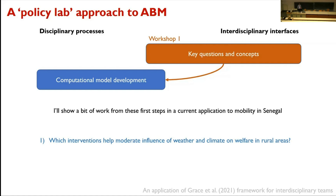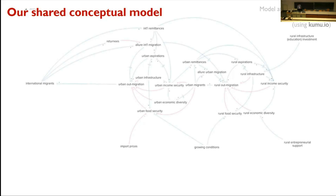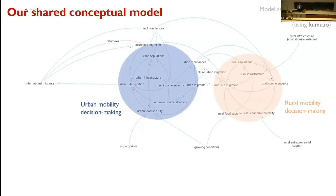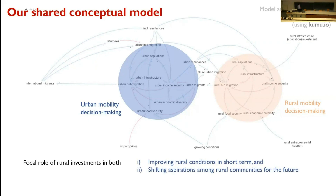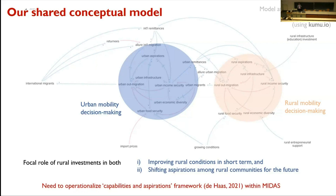I'll show a quick example of work we're doing now looking at mobility in Senegal, where we're trying to address questions about the kinds of interventions that help shape how the impacts of weather and climate can be best moderated in rural spaces, while also examining what that does to shift whether people stay there long-term. We conducted the first workshop and came up with a conceptual model that we worked very hard to make look like an animal. That allowed us to isolate a locus of processes shaping rural mobility decision-making, as well as a related locus shaping urban mobility decision-making.